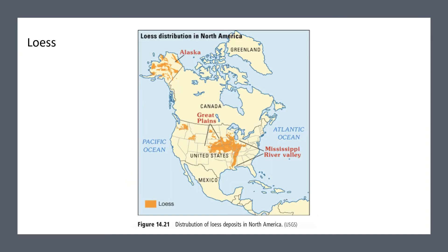Clay and silt deposits are referred to as loess. Loess locally occurs in beds that can be several meters thick. The fine grains are easily moved large distances by wind and are continually reworked. Loess deposits make up roughly 10% of the Earth's land surface and make up a large portion of the Midwestern United States.